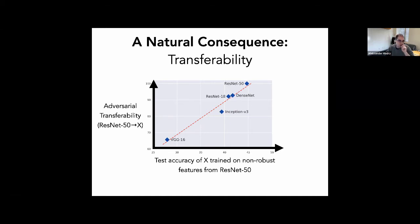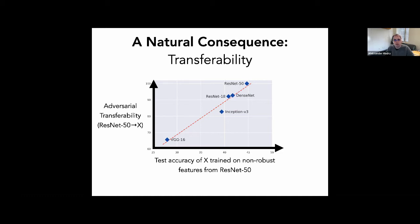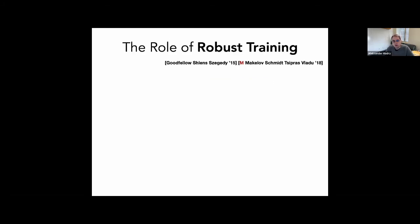A student question: will accuracy on the robustified dataset be lower than on the original? Yes. When robustifying the dataset we erase non-robust features. The model's ability to learn is diminished, so accuracy will generally be lower than what you can achieve on the original dataset with standard training. That is the price of admission for robustification.